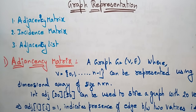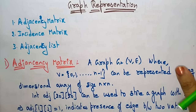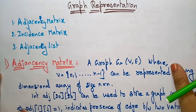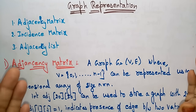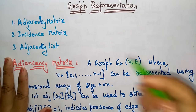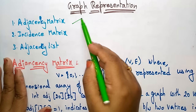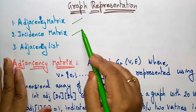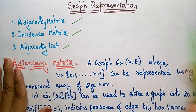Hi students, coming to the next topic in the subject data structures - graph representation. In the previous video, I explained the definition of a graph and the terminologies used in graphs. Now let us see the graph representation. If you want to represent the graph, you can follow three types: the adjacency matrix, incidence matrix, and adjacency list.